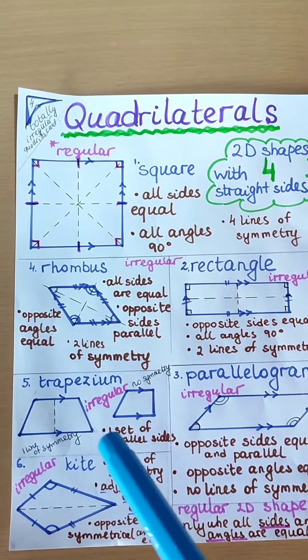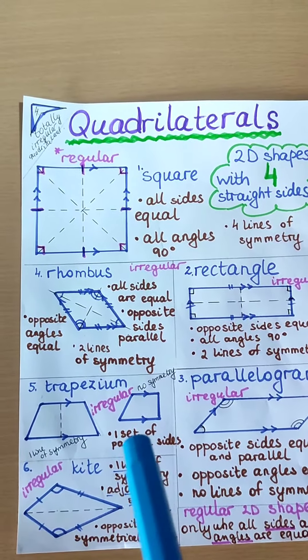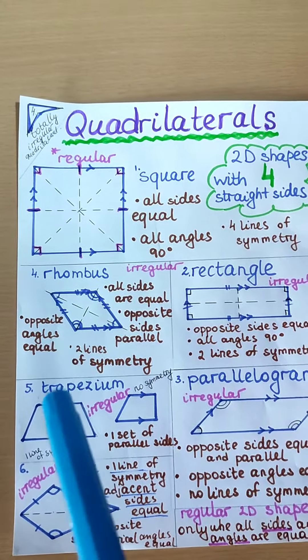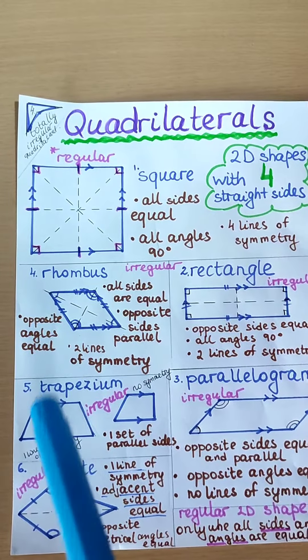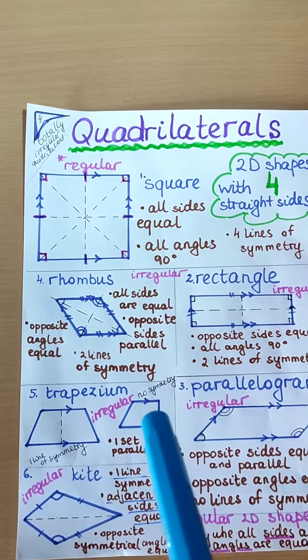This is a trapezium. Trapezium has one set of parallel lines. Sometimes it might have 1 line of symmetry if it's an isosceles trapezium. This one hasn't got any lines of symmetry.